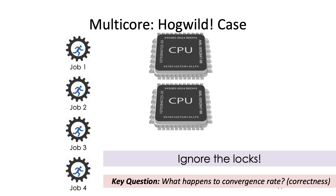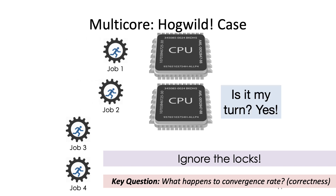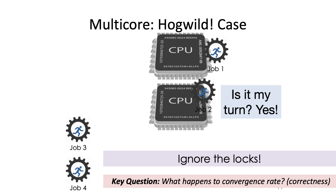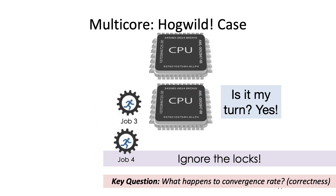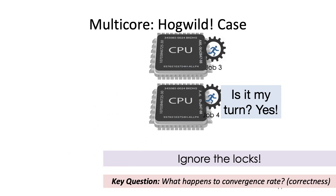So this is what we proposed to investigate. Effectively, the locking protocol was non-existent — just let the cores race. Note that this may lead to values that would never occur in any serial execution. So the key question was: would this converge at all? And how fast?